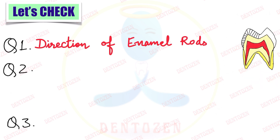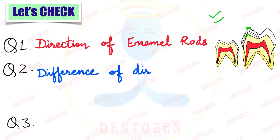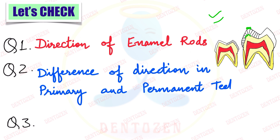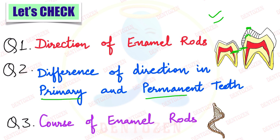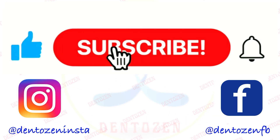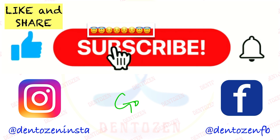Let's check what you have learned. First: what is the direction of enamel rods — where do they start, where do they end, and at what angles? Second: what is the difference in direction in primary teeth versus permanent teeth in the cervical region? Third: what is the term used to describe the course of enamel rods? If you liked the video, tap the like button and share with your friends. Good luck for your exams!